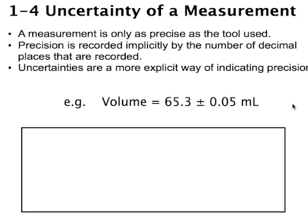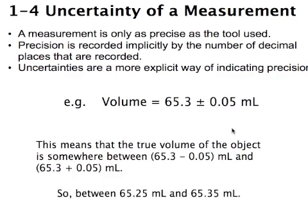Most measurements would look like this: someone took a measurement of something and they said it was 65.3 milliliters, but then they tacked this on the end, which is what we call the uncertainty of the measurement, plus or minus 0.05 milliliters. What that 0.05 milliliters means is that the true volume of the object will be somewhere between 65.25 and 65.35.